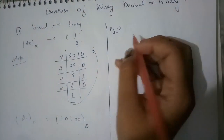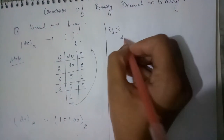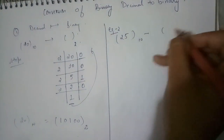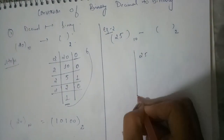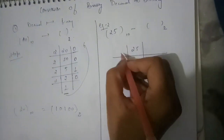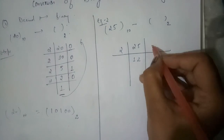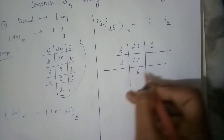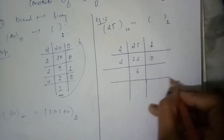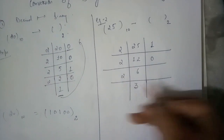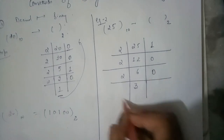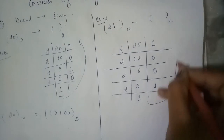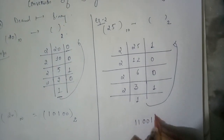Let's take another example — the number 25. Converting 25 into binary: 25 ÷ 2 = 12 remainder 1; 12 ÷ 2 = 6 remainder 0; 6 ÷ 2 = 3 remainder 0; 3 ÷ 2 = 1 remainder 1. Reading remainders from bottom to top, the binary representation of 25 is 11001.